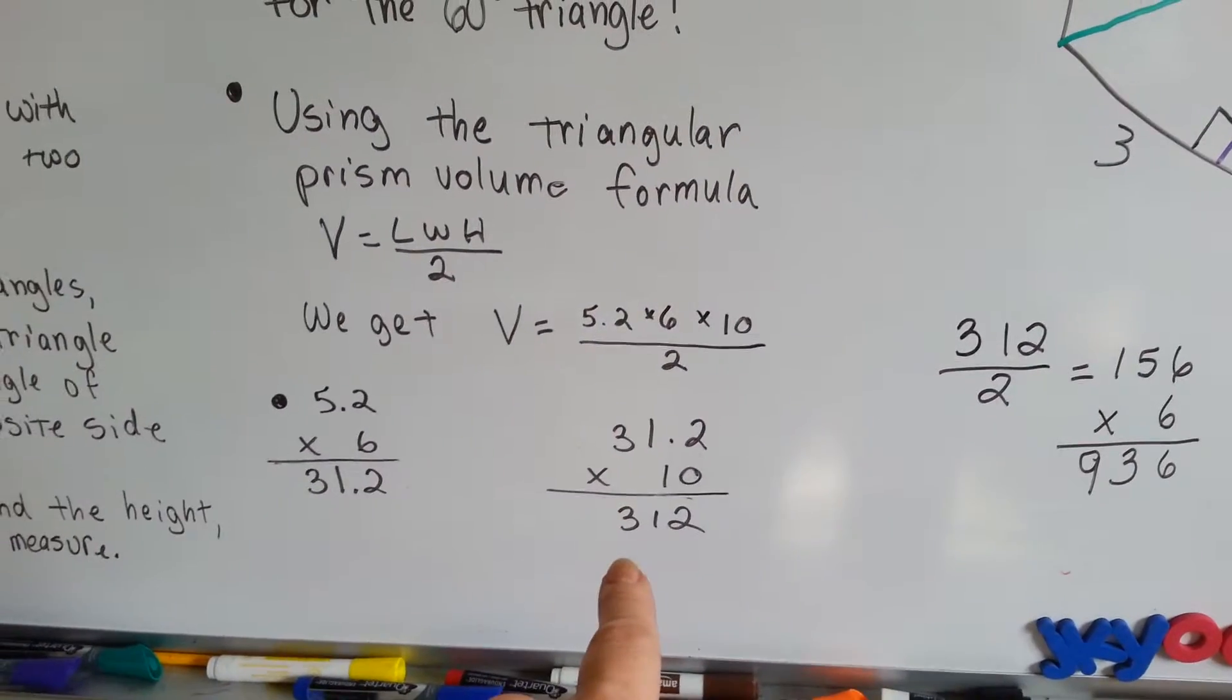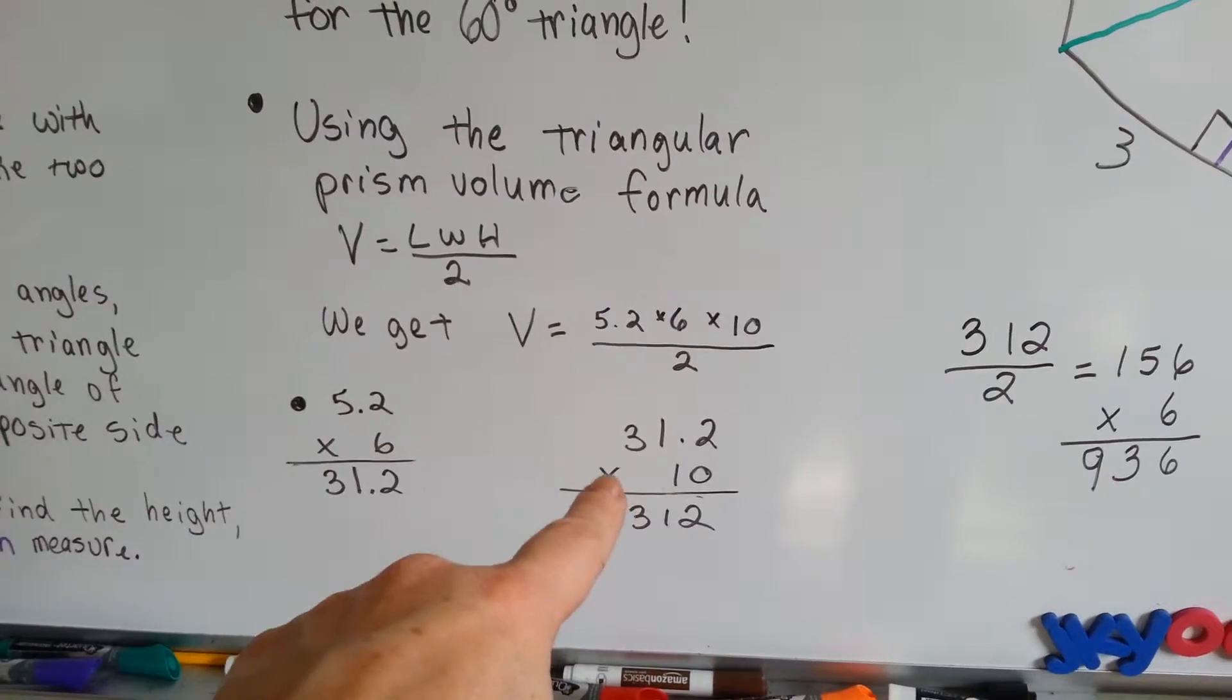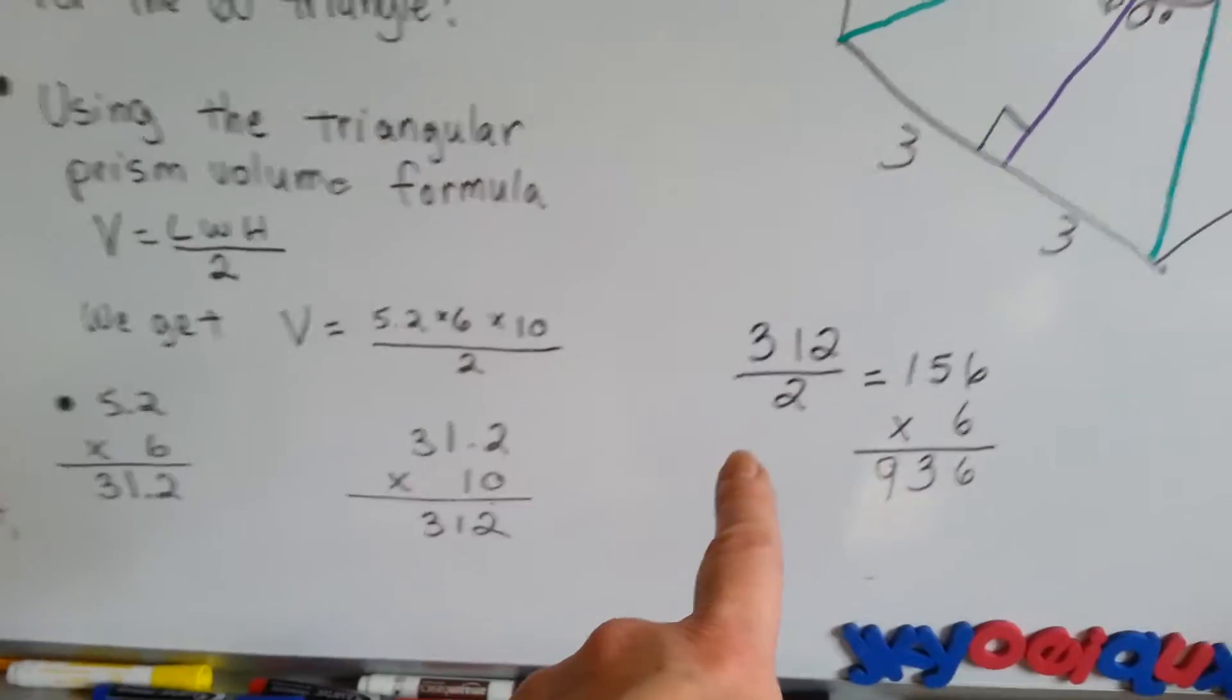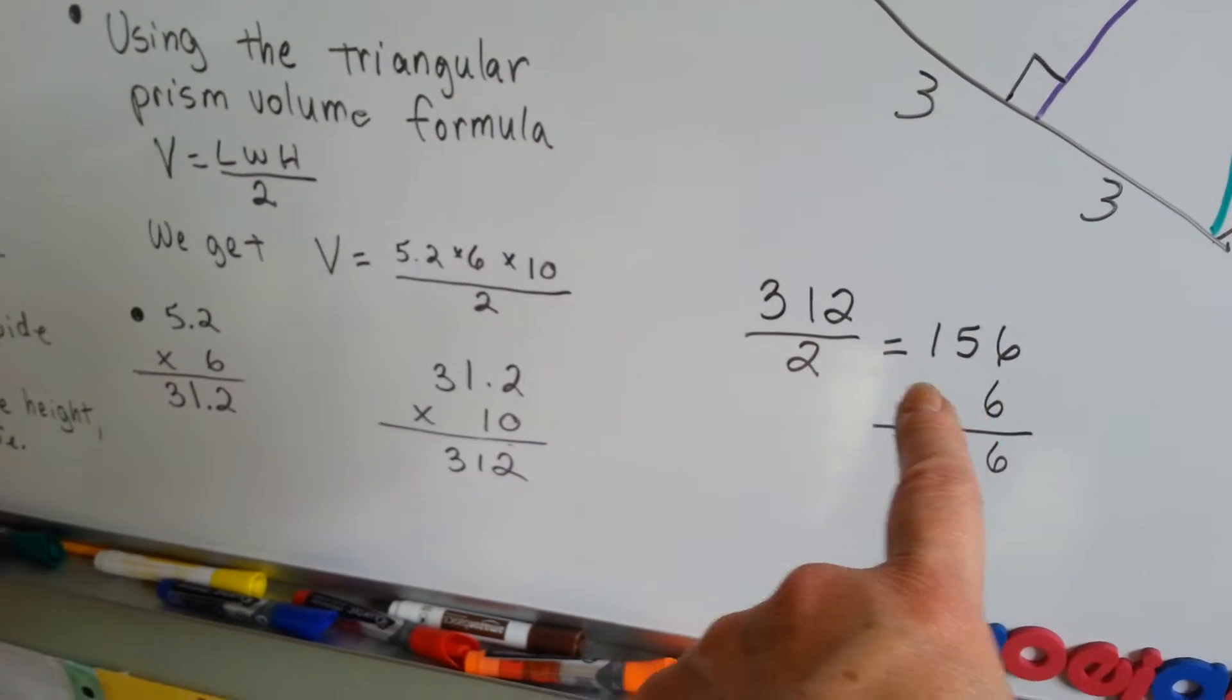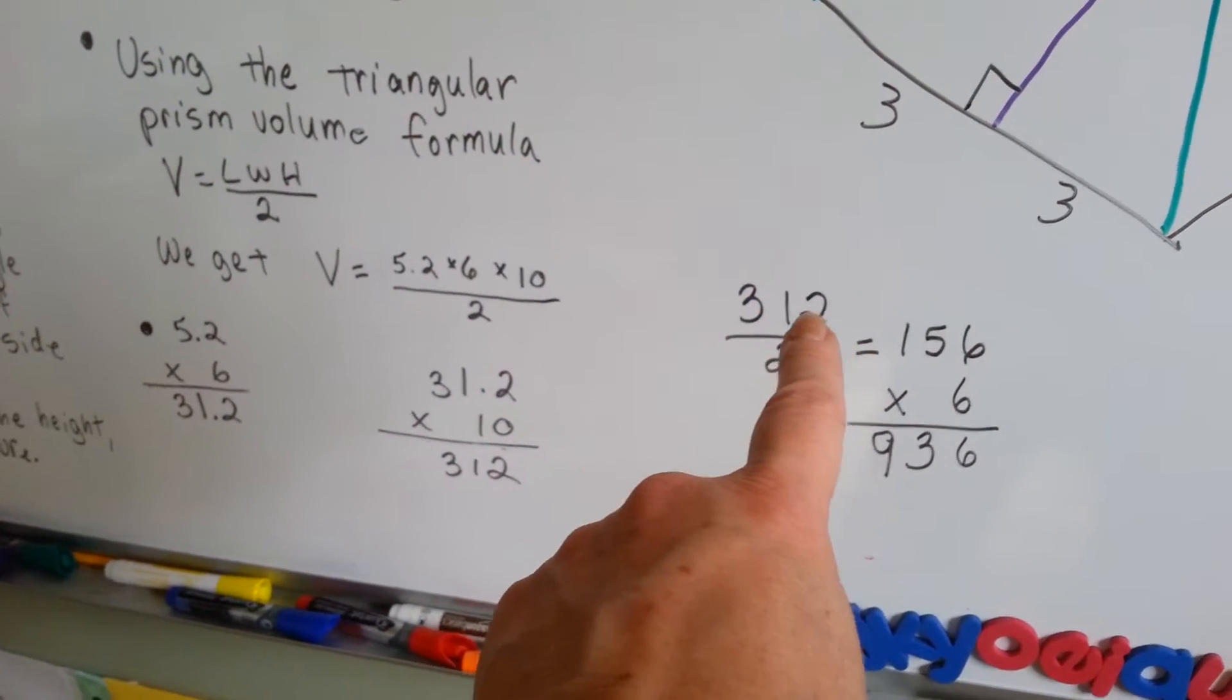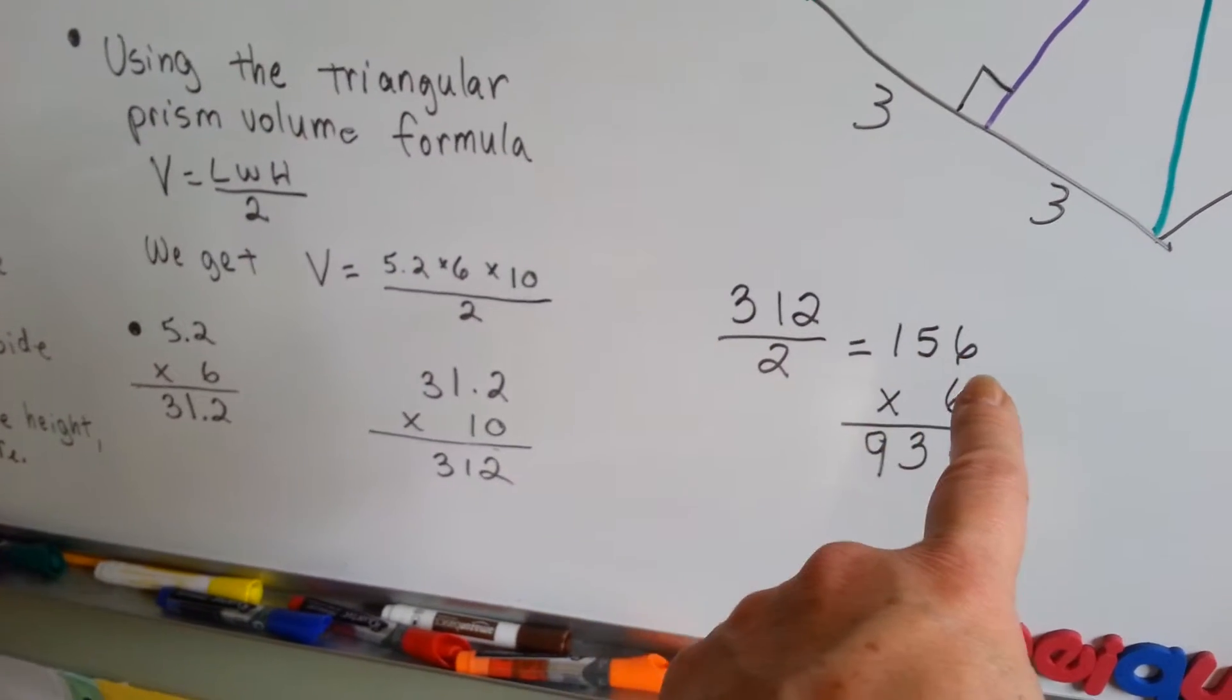Now that we've got the 312, we did all this multiplication, we need to divide it by 2. 312 divided by 2, 300 divided in half is 150, 12 divided in half is 6, so it's 156.